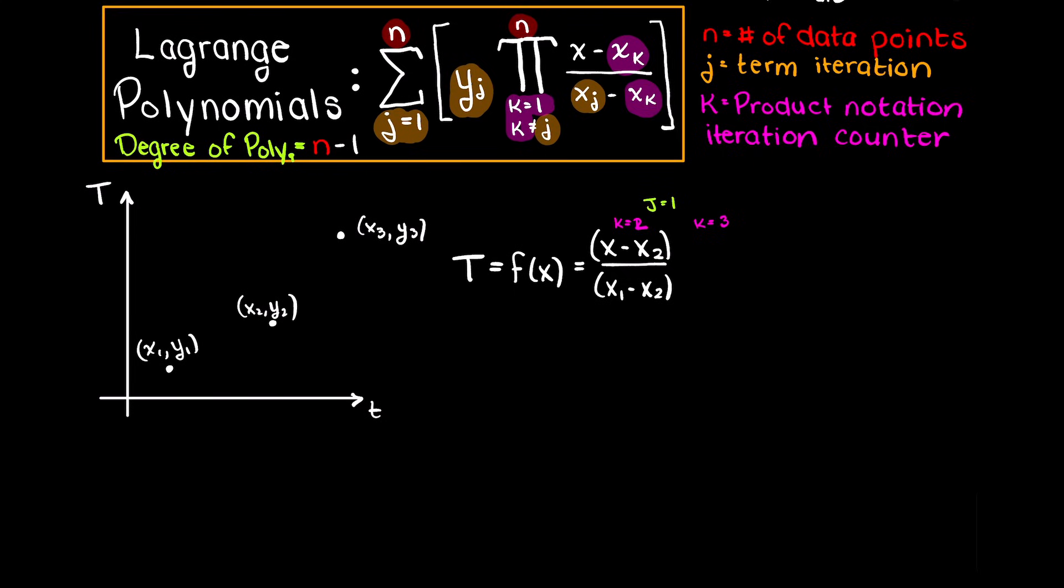And because this is product notation, we multiply our next iterations until we reach n, which is 3 for this example. Therefore, through the same logic we have the following, and this is all we need to do for our first term.